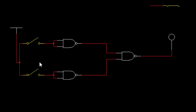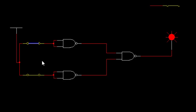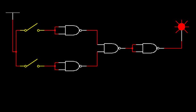Next we see NAND as OR gate. With both inputs 0 0, output is 0; for 0 1 output is 1; for 1 0 output is 1; for 1 1 output is again 1. These three NAND gates together are working as a single OR gate.